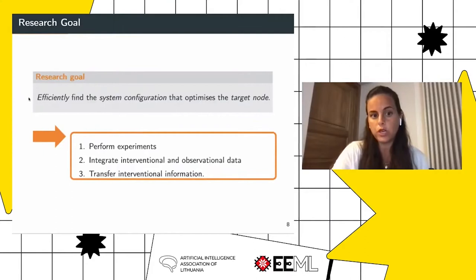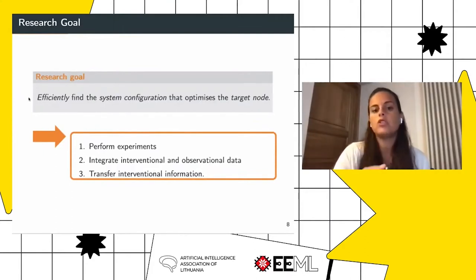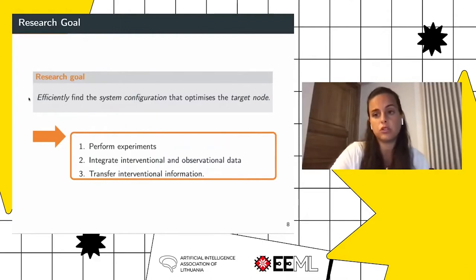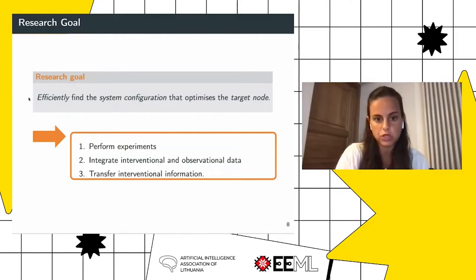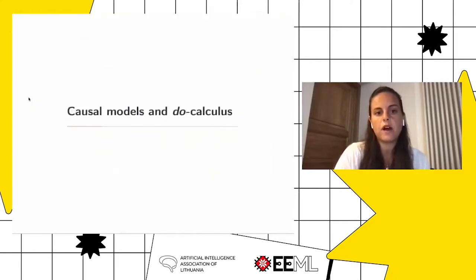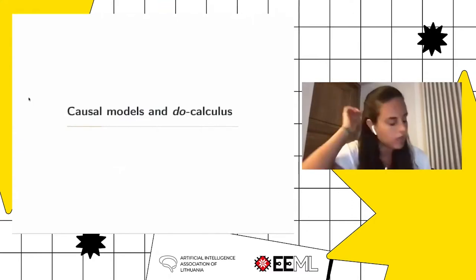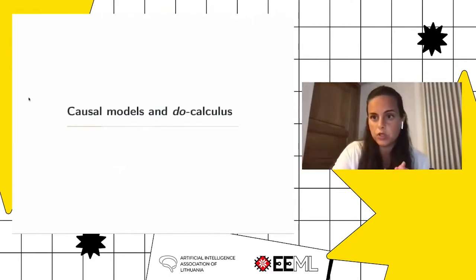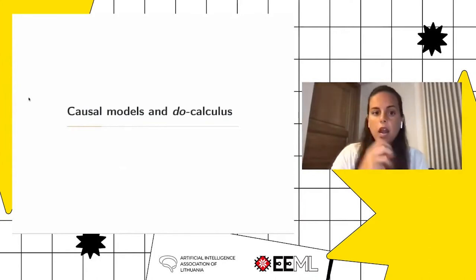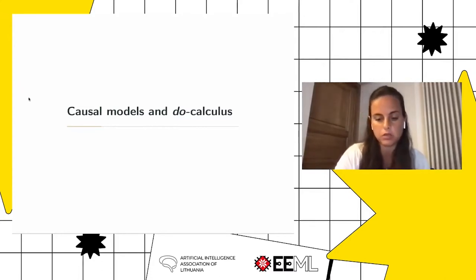In order to answer this question, we need to do three things: perform experiments, integrate observational and interventional data, and transfer interventional information. These things will become clear as we discuss causal Bayesian optimization. In general, to find the optimal configuration — the optimal intervention — we need to frame an optimization problem in causal terms. I'll give a quick background on causal models needed for this approach.